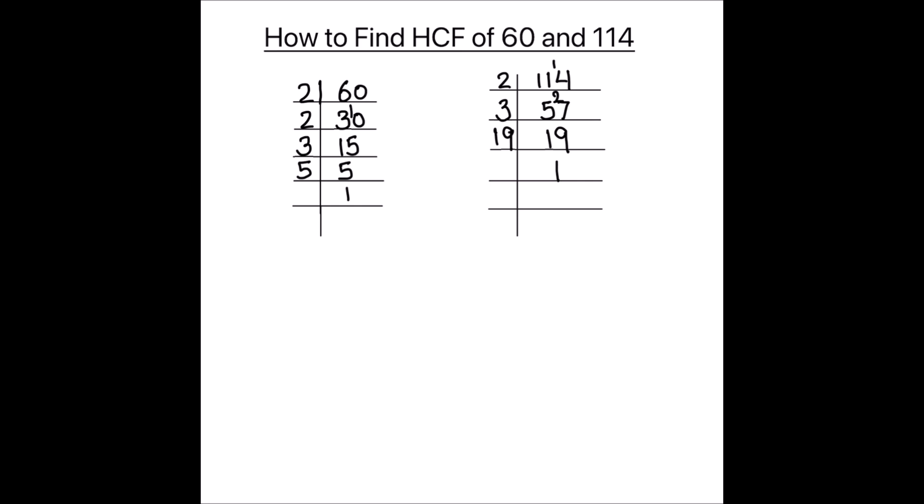So we got the factors of 114 too. Now we are going to write the factors of both the numbers. Factors of 60 is 2 times 2 times 3 times 5. And the factors of 114 are 2 times 3 times 19.